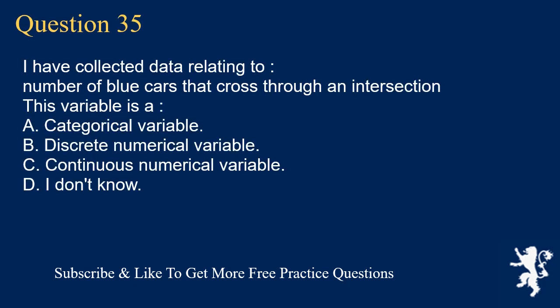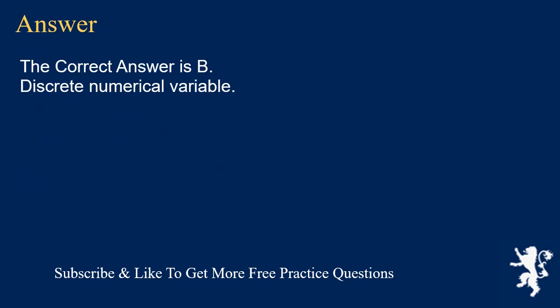Question 35: I have collected data relating to the number of blue cars that cross through an intersection. This variable is A. categorical variable, B. discrete numerical variable, C. continuous numerical variable, D. I don't know. The correct answer is B, discrete numerical variable.